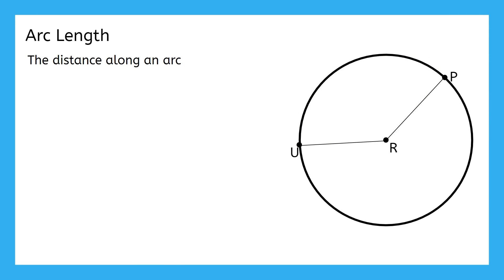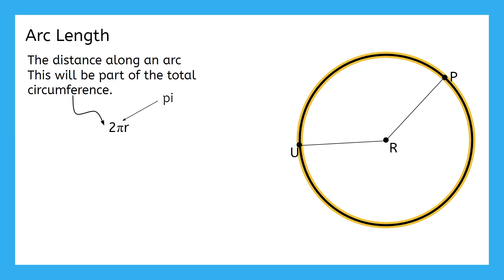Our other new term is arc length. This is the distance along an arc. The arc length is a part of the circle's circumference. A circle's entire circumference can be calculated as 2 times pi times r, with r representing the radius of the circle. The arc length will just be a portion of that entire circumference depending on how far along the circle the arc reaches.